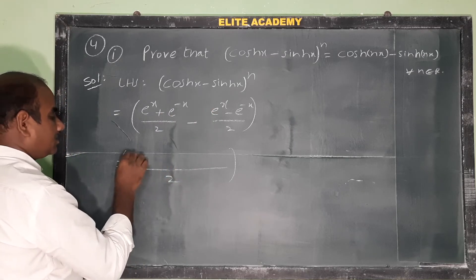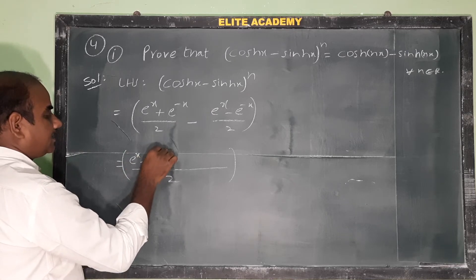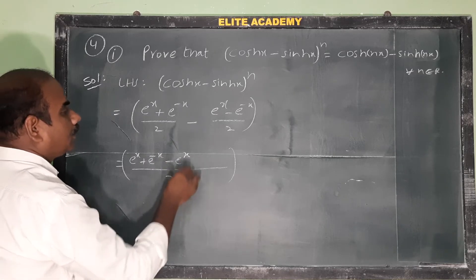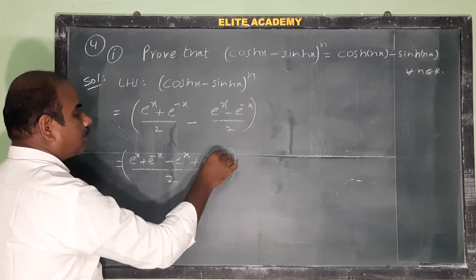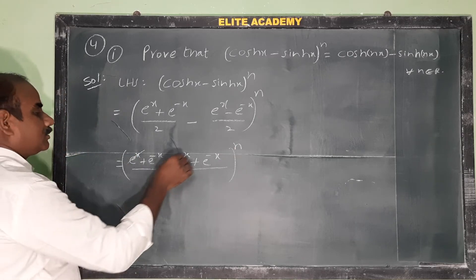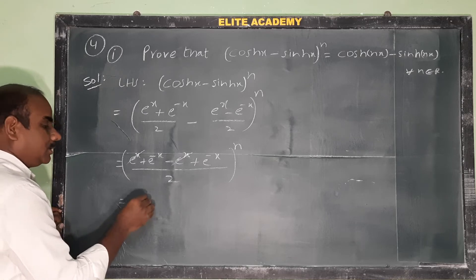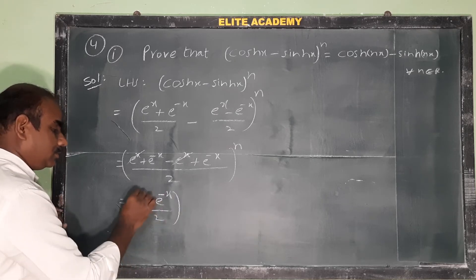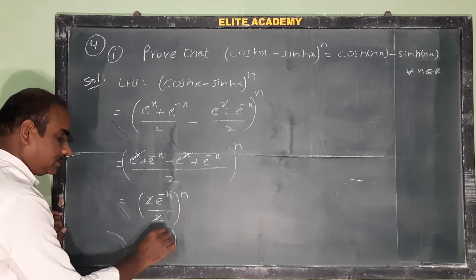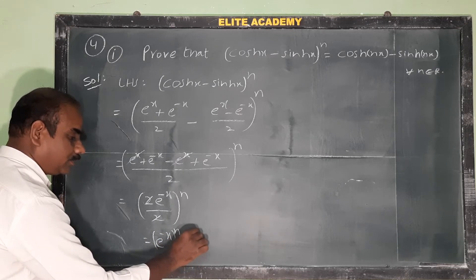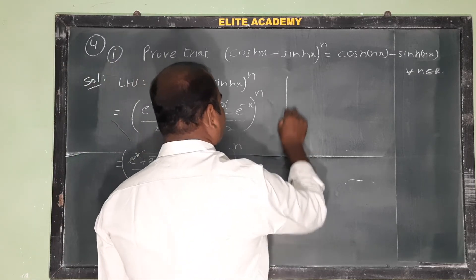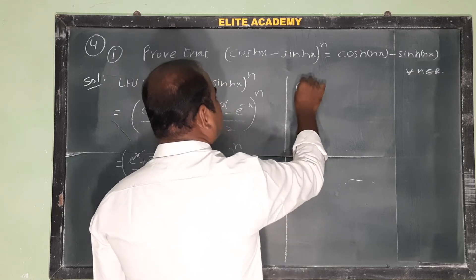So we get e^x + e^(-x) minus e^x minus into minus plus e^(-x), whole power n. The e^x and minus e^x cancel, leaving 2e^(-x) by 2, whole power n. The 2 cancels, giving e^(-x) whole power n, which equals e^(-nx). This is the LHS.